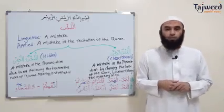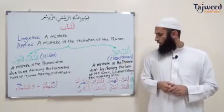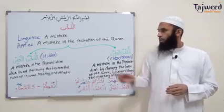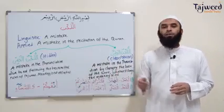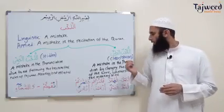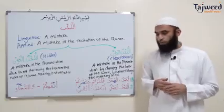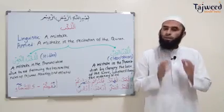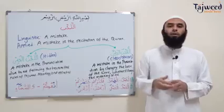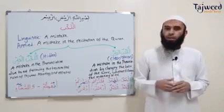The mistakes when reciting the Qur'an are of two types. Number one, اللحن الجلي, which is translated as the clear obvious mistake, and اللحن الخفي, the hidden mistake. Now why is this called clear and obvious, and to whom is it clear and obvious? It's clear and obvious to the scholars of the Qur'an, the students, and also most common Muslims would be able to recognize these mistakes.